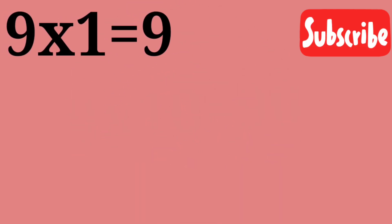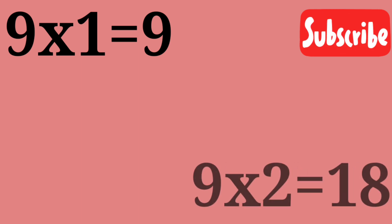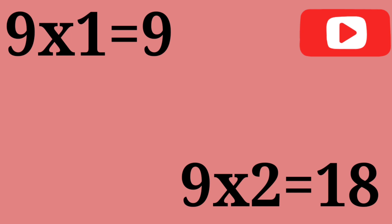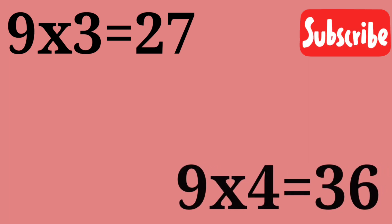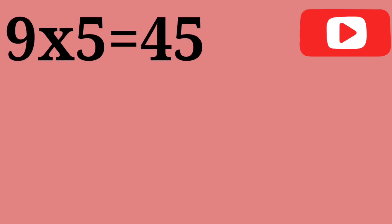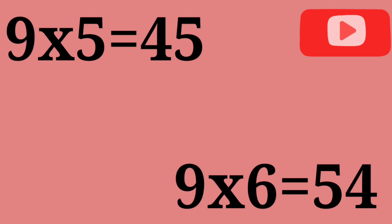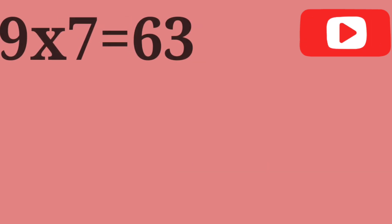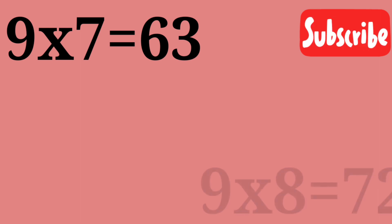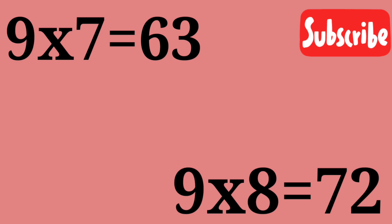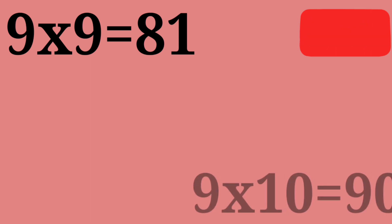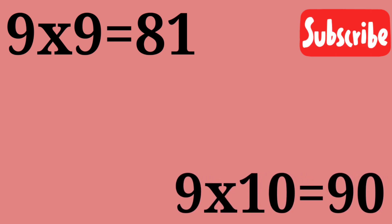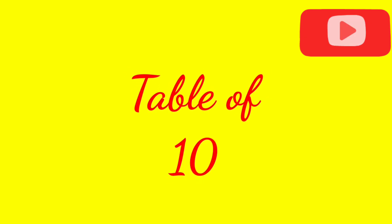9 ones are 93. 9 twos are 18. 9 threes are 27. 9 fours are 36. 9 fives are 45. 9 sixes are 54. 9 sevens are 63. 9 eights are 72. 9 nines are 81. 9 tens are 90.